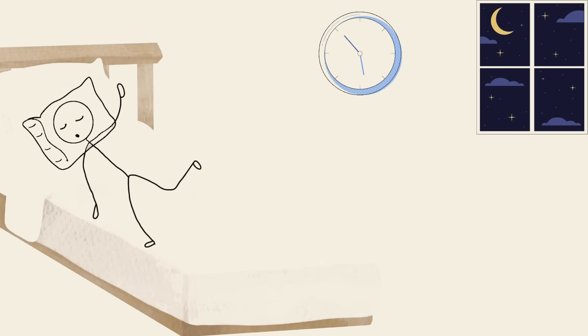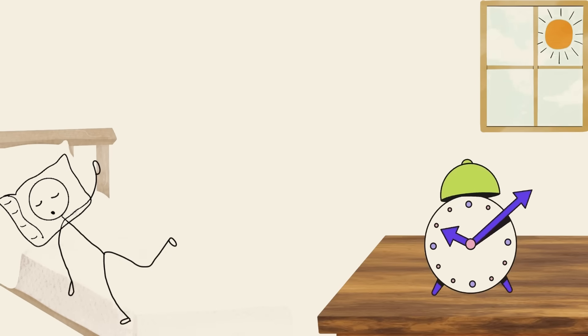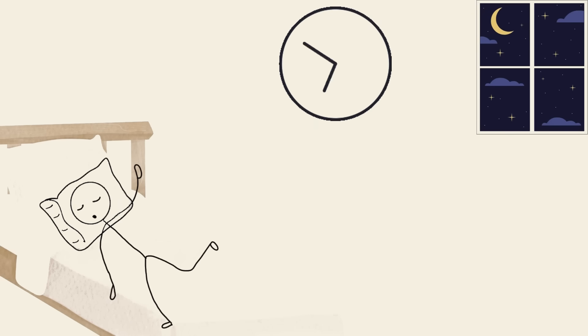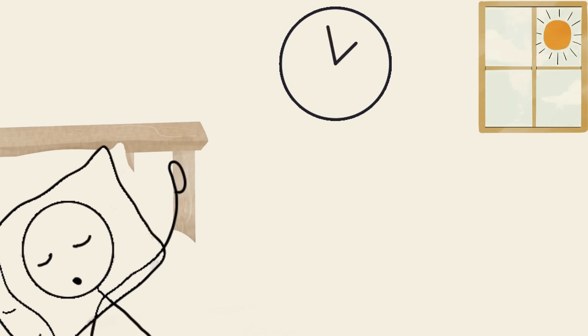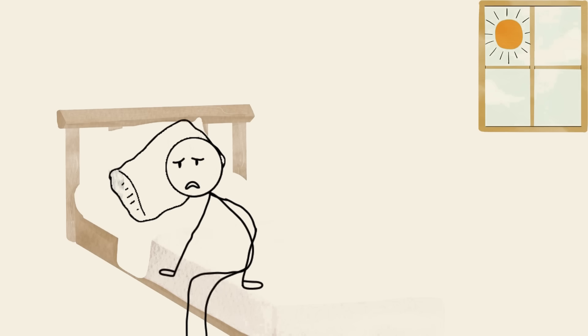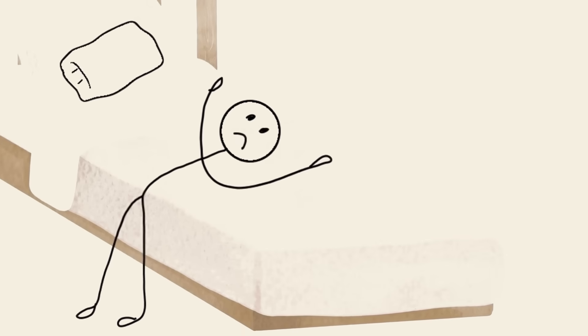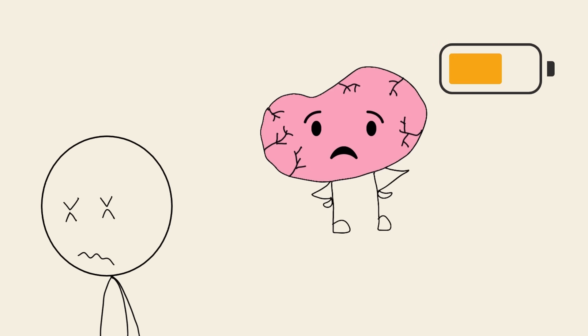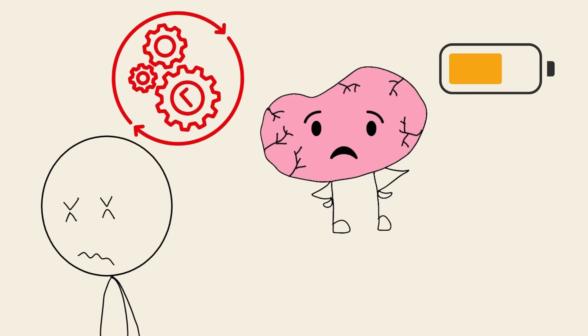Hypersomnia. Let's talk about the glitch where your brain just won't get off the sleep train, even when it's time. People with hypersomnia can sleep for 10, 12, even 14 hours and still wake up feeling exhausted. It's not just being tired.